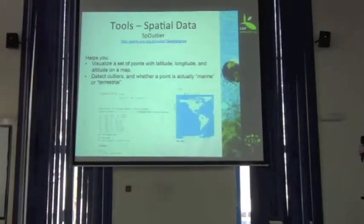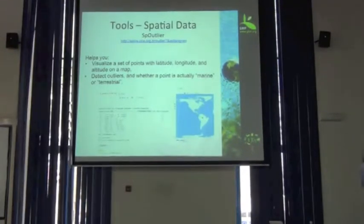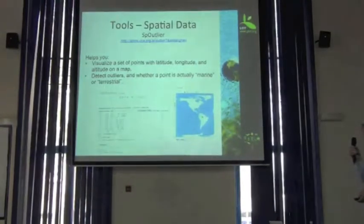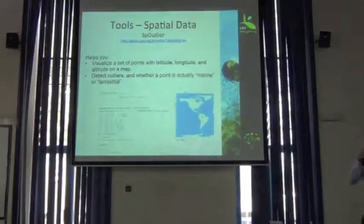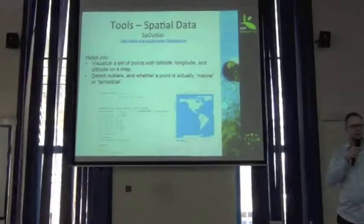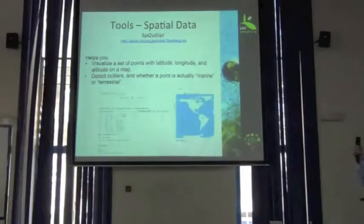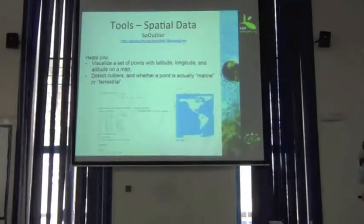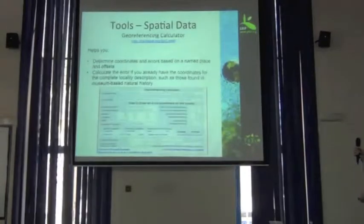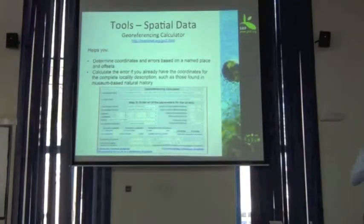This is another one called Species Outlier. It helps you visualize a set of points on a map and detect outliers, determining whether or not your points are in fact marine or terrestrial. It's a very nice online application tool.